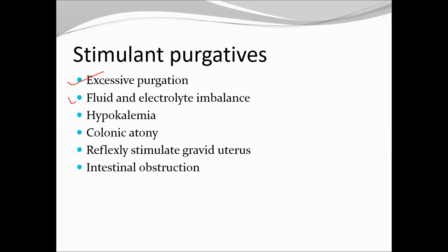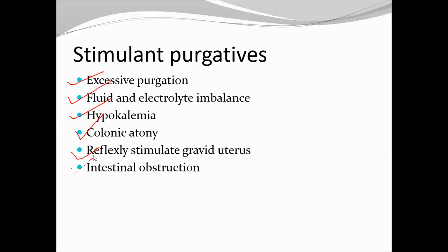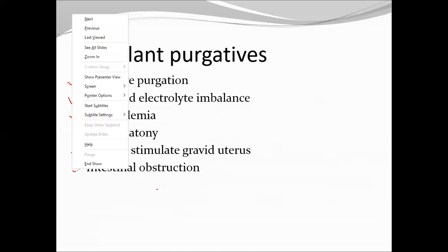Stimulant purgatives are used for excessive purgation. They could lead to fluid and electrolyte imbalance, cause hypokalemia, cause colonic atony, reflexly stimulate the gravid uterus, and could also lead to intestinal obstruction. The first drug in this group is bisacodyl, which is activated in the intestine and acts on the colon.